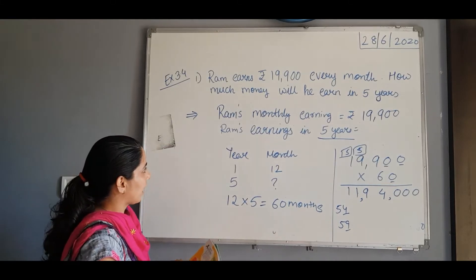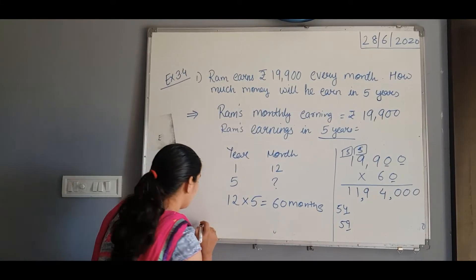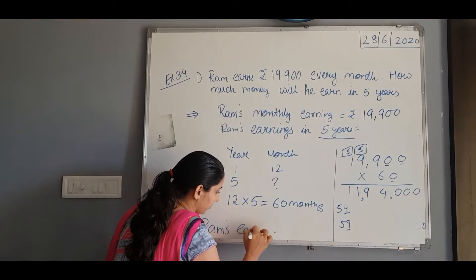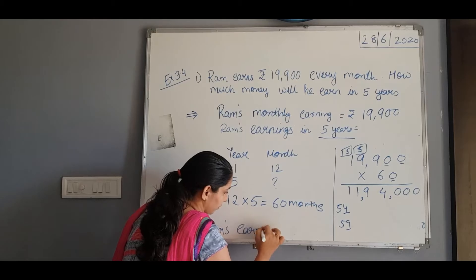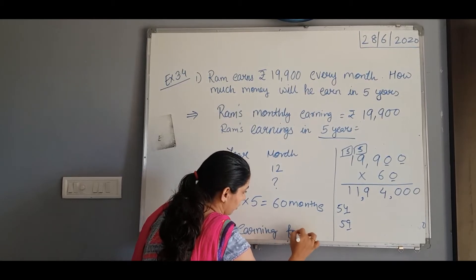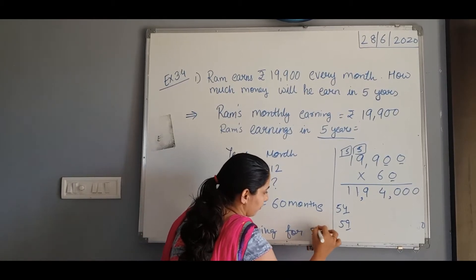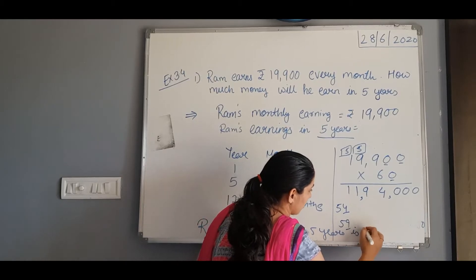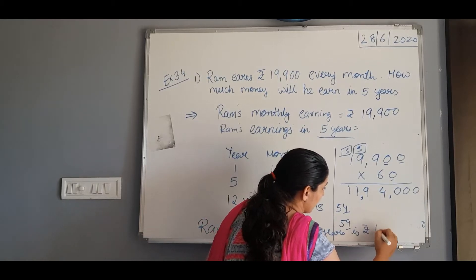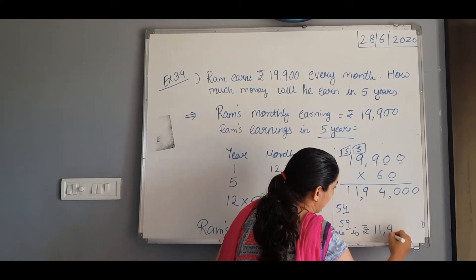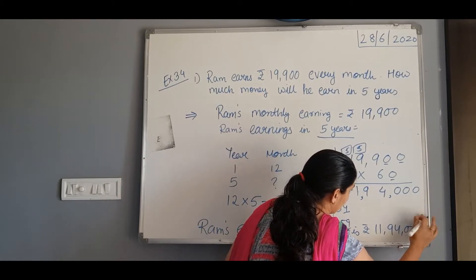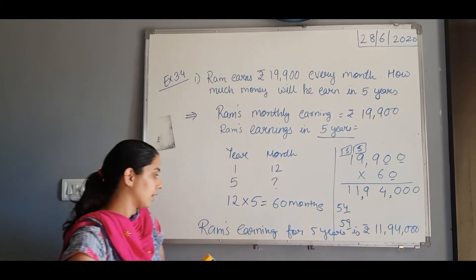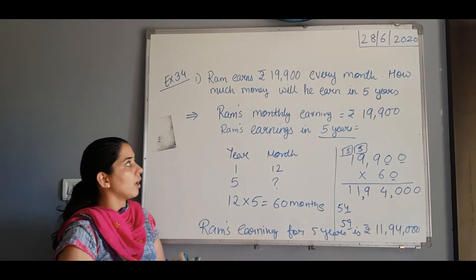Now we will write the final statement: Ram's earning for 5 years is rupees 11,94,000. The final statement you have to write.